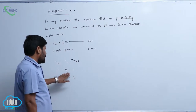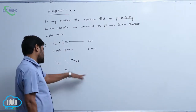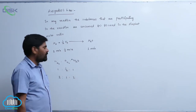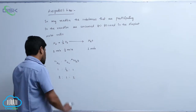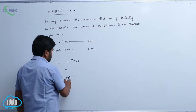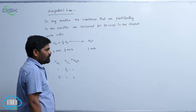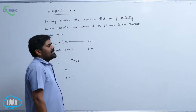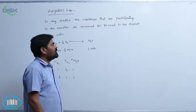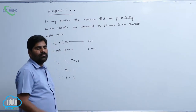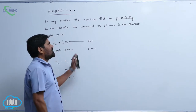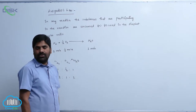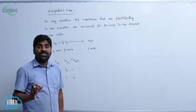Therefore, this total number of moles — each mole is multiplied by 2, we get whole numbers because it is a fraction. So that gives us 2, 1, and 2. This means that in any reaction, substances participating in the reaction are consumed or formed in the simplest mole ratios.